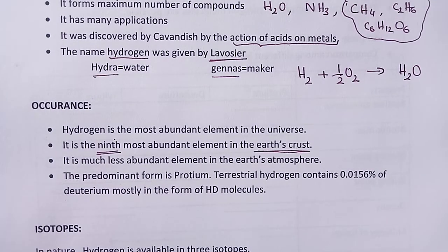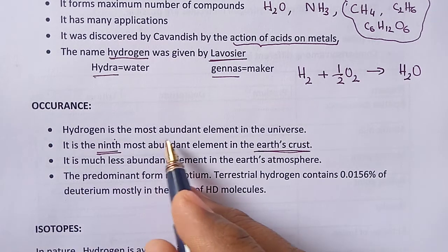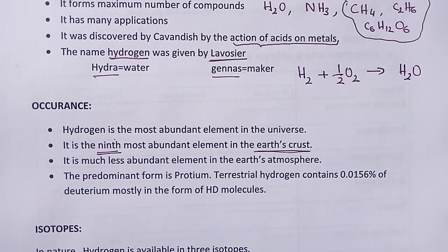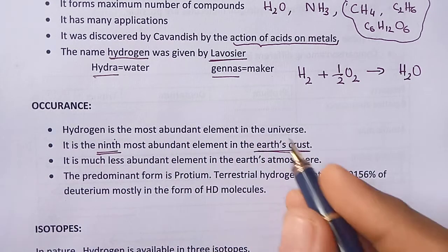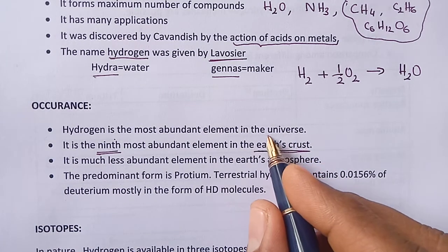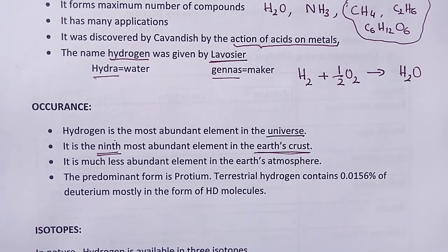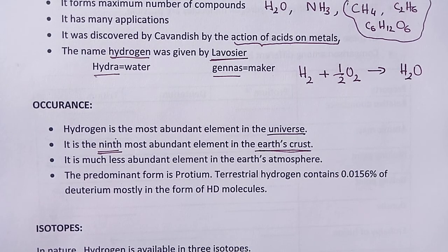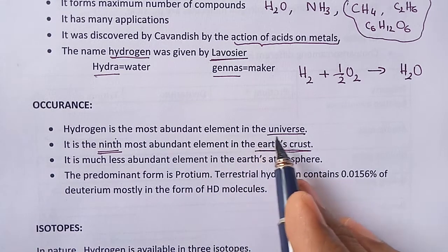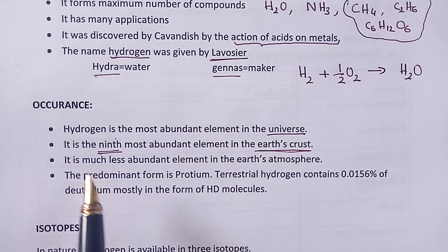Now let us look into the occurrence. Hydrogen is the most abundant element in the universe — considering our planet earth, surrounding planets, sun, moon, the Milky Way, and everything. It is the ninth most abundant element in the earth's crust, while the first most abundant element is oxygen.